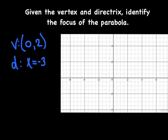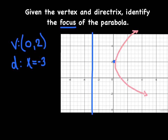Try this one: the vertex is at (0, 2) and the directrix is at x = −3. The parabola opens away from the directrix, so it opens to the right. The distance from the directrix to the vertex is 3 units, so moving 3 more units to the right gives an x-coordinate of 3. The focus is at (3, 2).